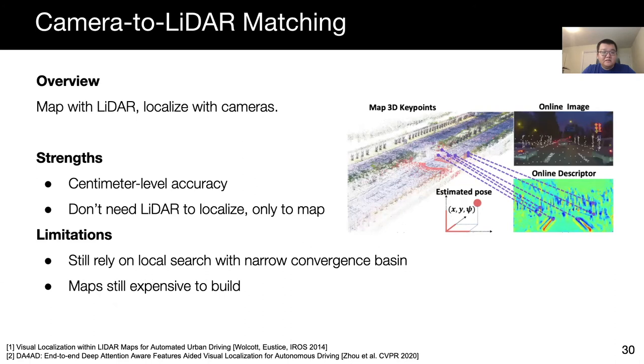Another line of work is concerned with eliminating the need for LiDAR in localization and only using it for building maps. This has the potential to improve scalability while maintaining accuracy. Some previous approaches match human-made cues detected in camera images to LiDAR maps to localize. These methods have the potential to reduce the cost of localization while maintaining centimeter-level accuracy. However, they still require a local search to estimate the vehicle pose. At the same time, the need for mapping dense geometric data still represents a major cost, limiting the scalability of this line of work.